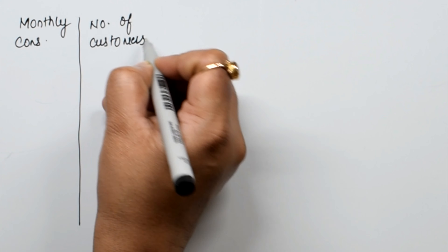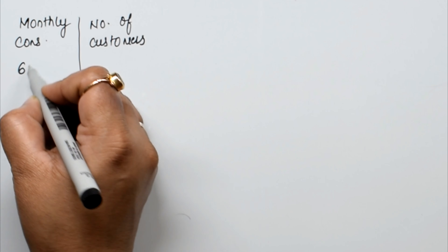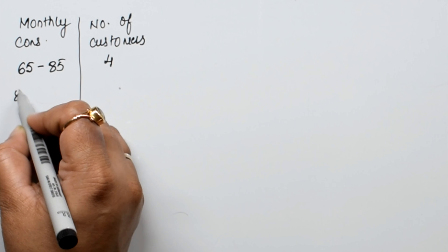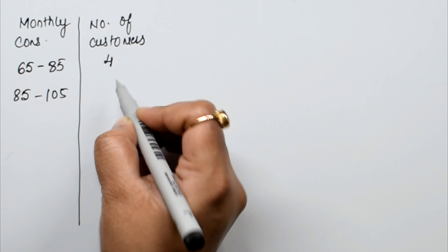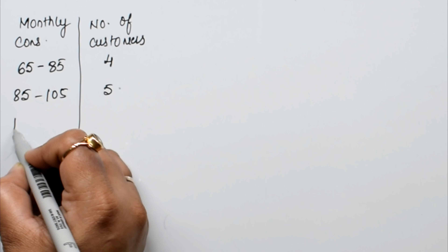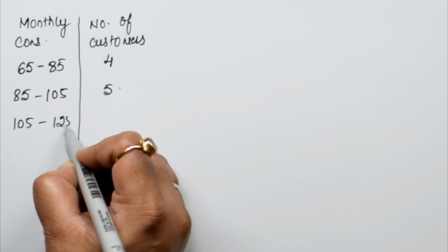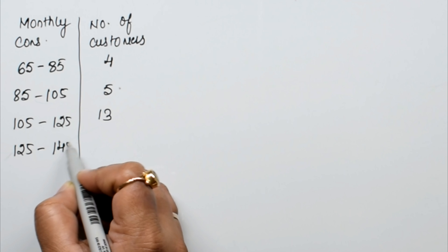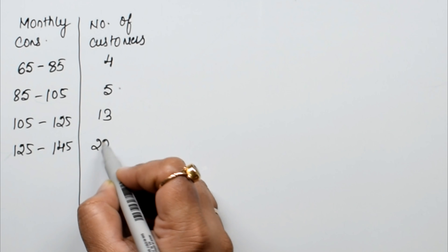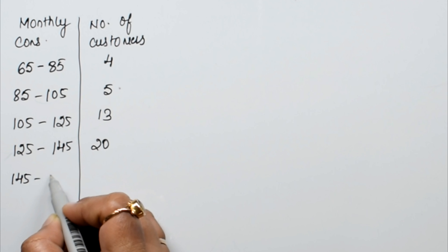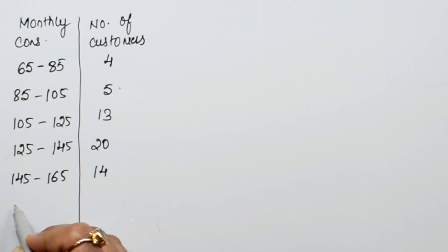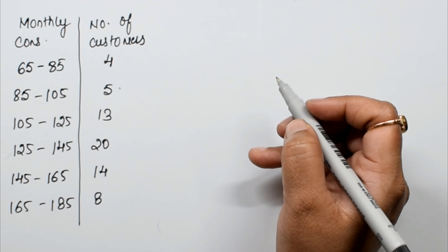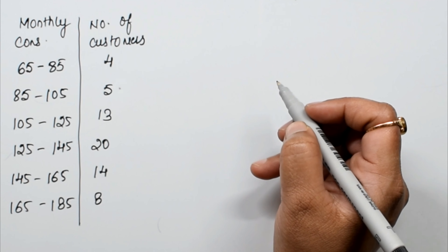Monthly consumption: 65 to 85 units for 4 customers, 85 to 105 for 5 customers, 105 to 125 for 13 customers, 125 to 145 for 20 customers, 145 to 165 for 14 customers, and 165 to 185 for 8 customers. Now we are forming a more-than type cumulative frequency distribution.